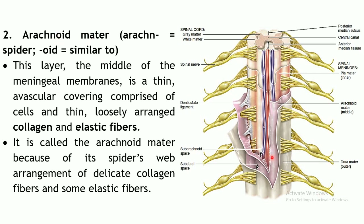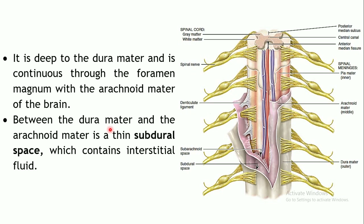The second layer is the arachnoid mater — the middle layer. 'Arachnoid' means spider-like, named because of the spider's web-like arrangement of collagen fibers and elastic fibers present. This layer is thin and avascular — meaning no blood vessels are present. It comprises loosely arranged collagen and elastic fibers and is present deeper to the dura mater, in continuation with the arachnoid mater of the brain.